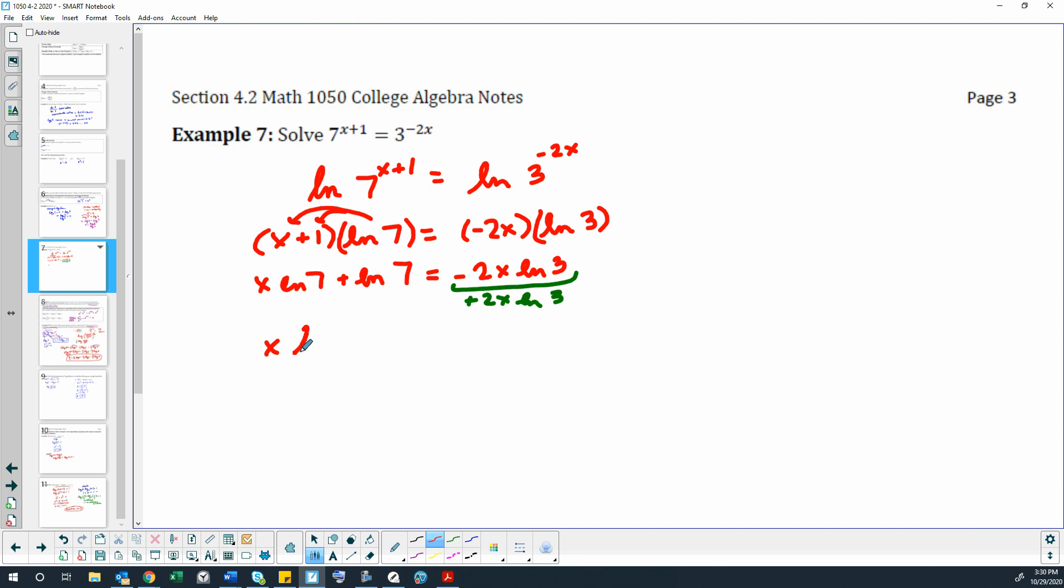So I have x natural log of 7 plus 2x natural log of 3. Now here's the other thing that's happening: I'm going to take this and move it to the other side, which is going to turn that into a negative, subtracted natural log of 7.